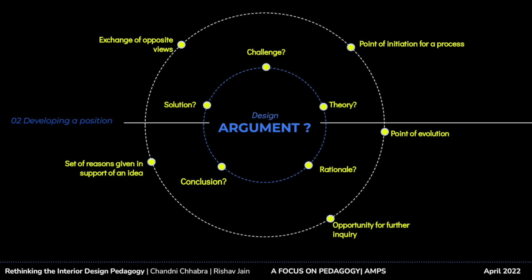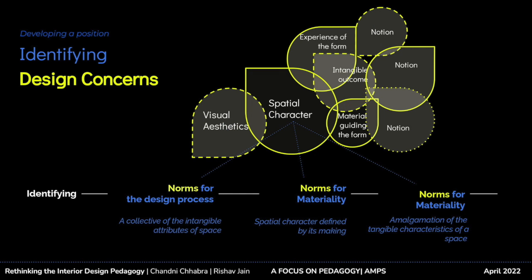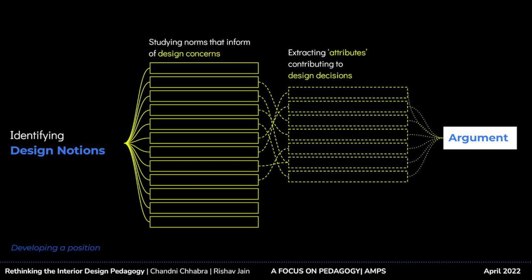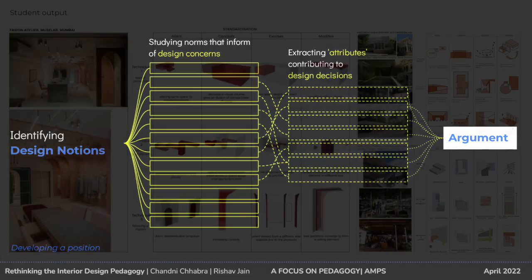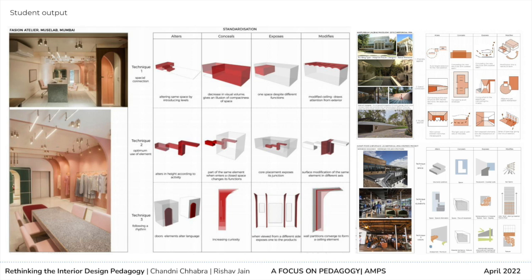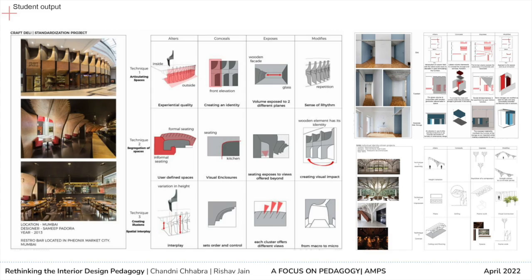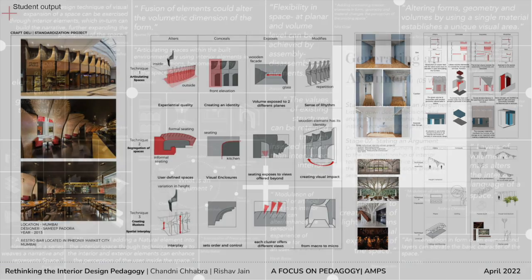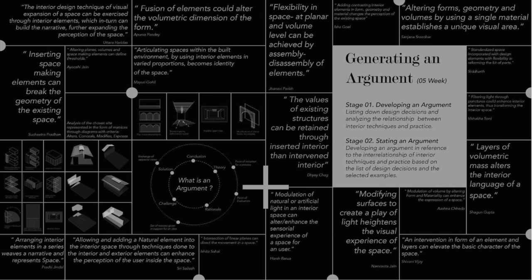An argument can be a point of initiation for a process, an exchange of opposite views, a reason supporting an idea, and/or an opportunity for further inquiry. To generate an argument, students studied different projects from the practice of interior design and identified the norms governing the design decisions. Further, these norms were evaluated against the notions of interior design practices to extract the concerns that can be argued upon and developed as an approach to design. These slides show the analysis of interior projects in the form of a matrix to organize and derive ideas, with the final arguments developed at the end of stages one and two.